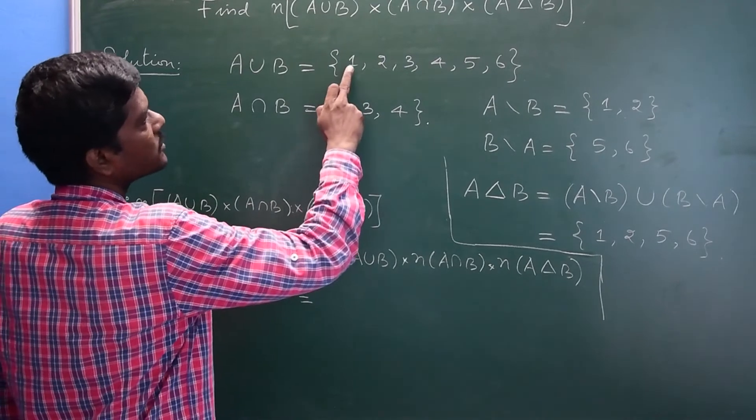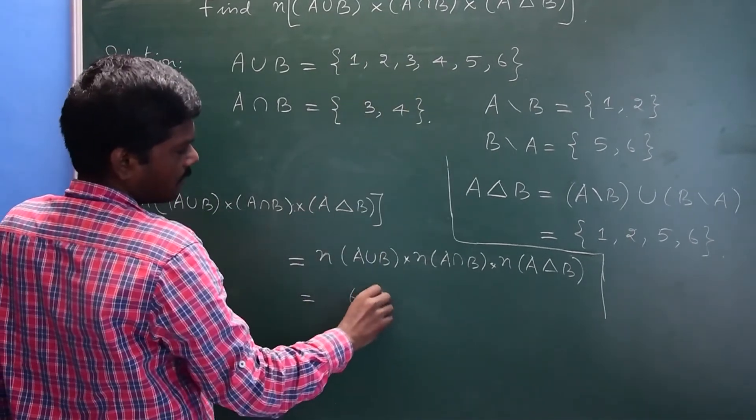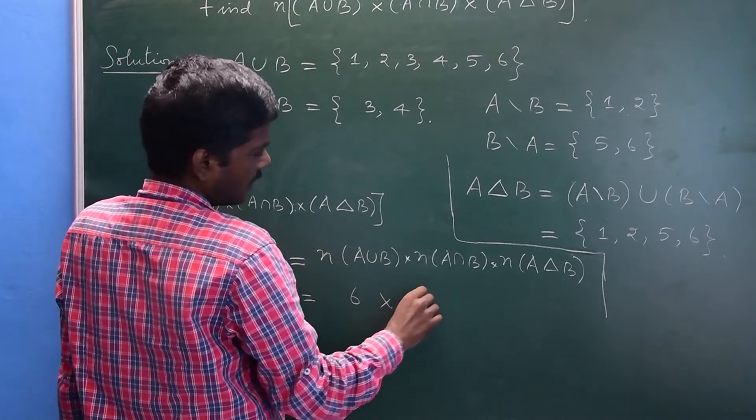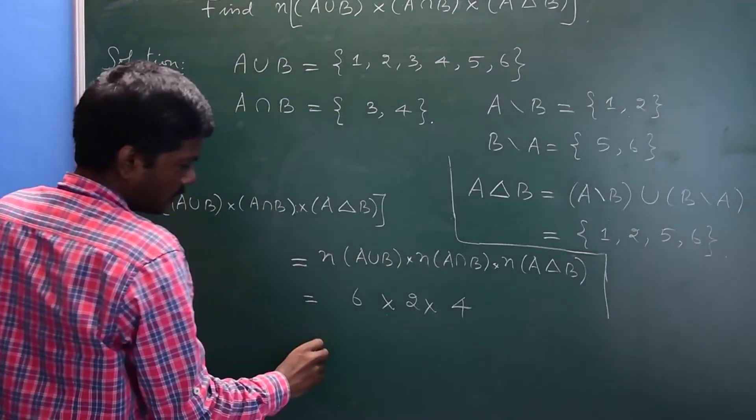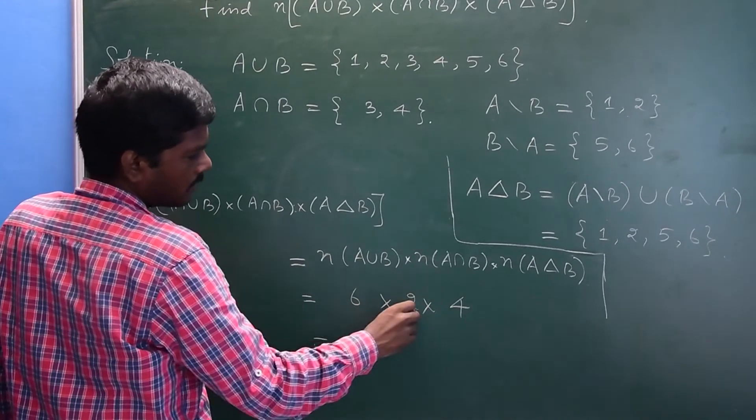A union B has 6 elements, A intersection B has 2 elements, symmetric difference has 4 elements. So what you get is 48.